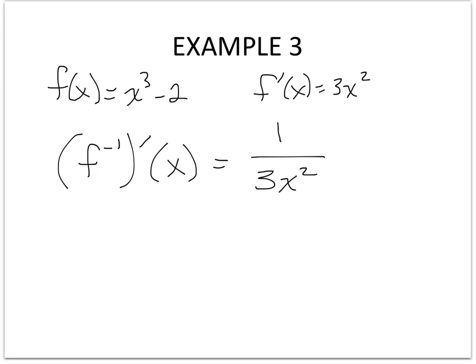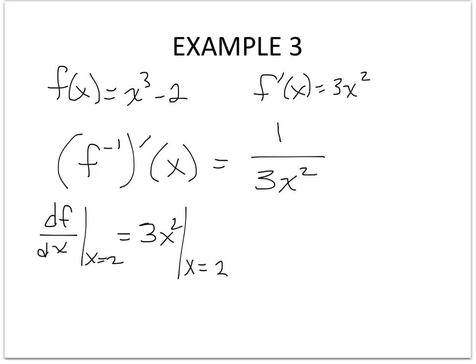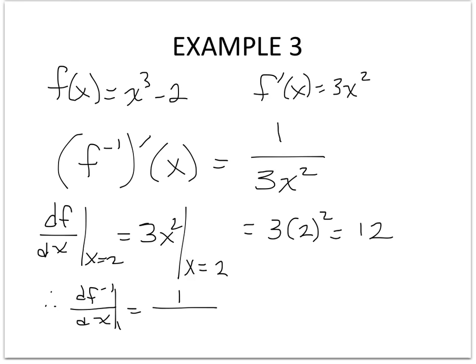Let's say we wanted to evaluate this at x equals 2. The derivative of the original function is 3x squared, and evaluating at 2 gives 12. Therefore, the derivative of the inverse evaluated at 2 is 1 over 3 times 2 squared, which is the reciprocal of 12. So Theorem 3 gives you a nice shortcut for finding the derivative of the inverse at a particular value.